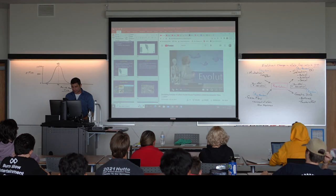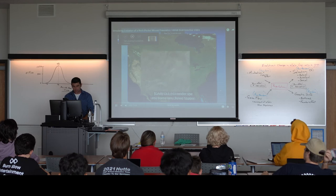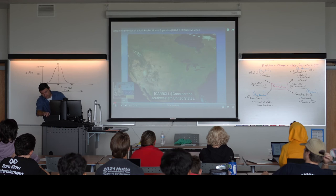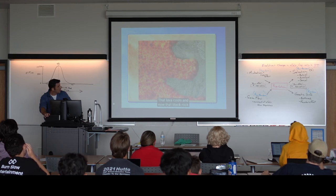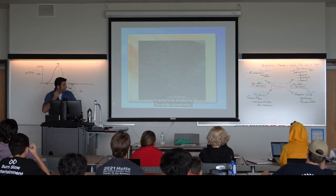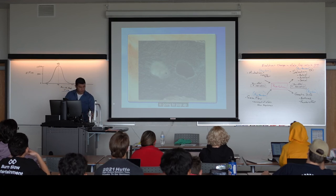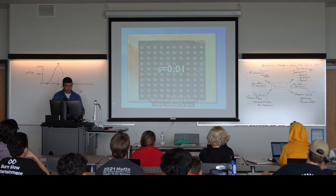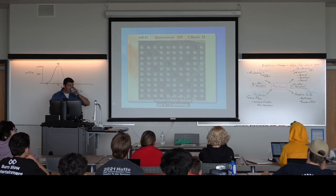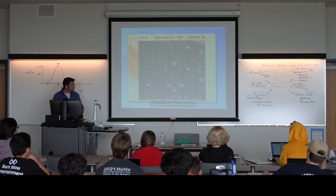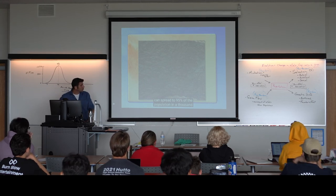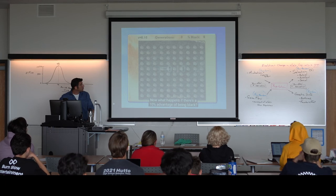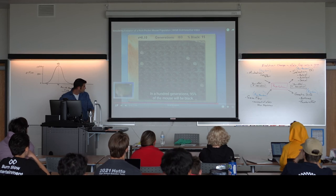Short videos show this in motion. Sandy-colored mice invaded the black rock, and once every thousand years or so a black mouse pops up. Owls are the natural predators, circling overhead. If we start with a population where just one mouse is black and has just a 1% advantage, in about 1,000 generations 95% of the mice will be black. If there's a 10% advantage, in just 100 generations 95% will be black. This shows that if a mutation is beneficial, it will quickly sweep through the entire population.